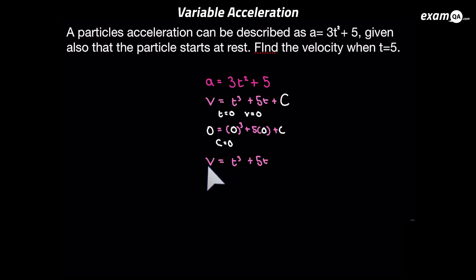Now we know the velocity equation without c in it, and we can answer the question: find velocity when t equals 5. We're just going to put t in as 5. You probably don't need a calculator to do this, and we get v equals 150.